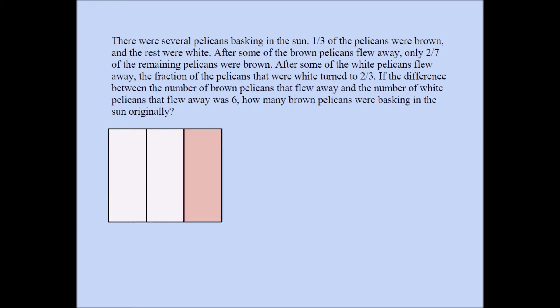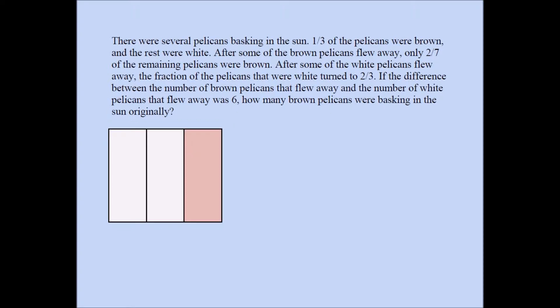Here I have the same question in smaller font and a picture. In my picture, I have a rectangle — the entire rectangle represents the pelicans. According to the question, one third of the pelicans were brown. That's why I have one strip representing one third of the pelicans in brown. That implies two thirds of the pelicans must have been white, so the white strip represents the two thirds of the pelicans which were white.